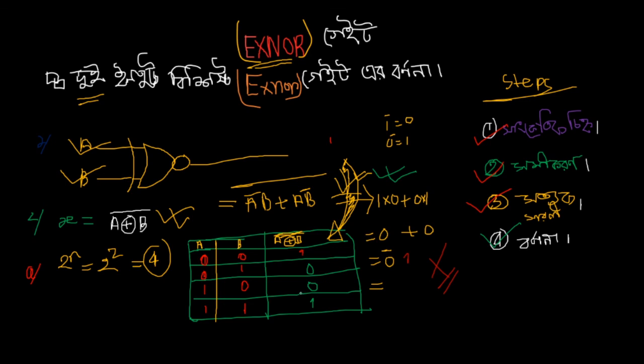When the output is 0, that's the X-NOR gate behavior. Thank you.